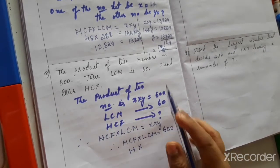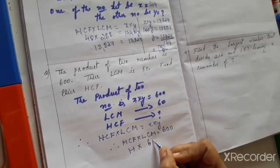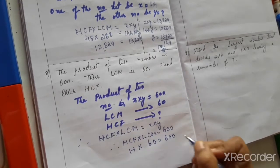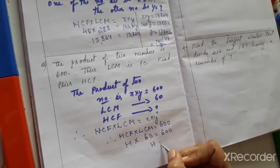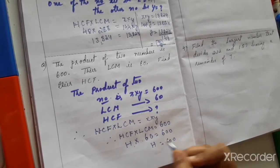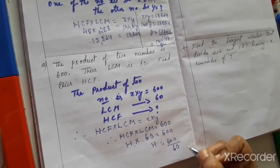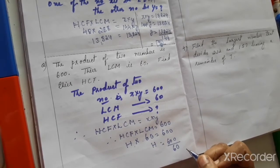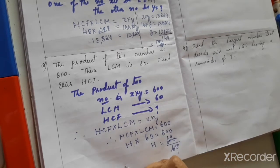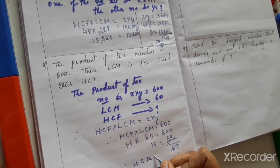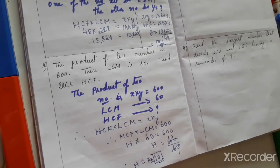HCF × LCM = 600. LCM is 60. So HCF × 60 = 600. Therefore HCF = 600 ÷ 60 = 10. So HCF equals 10.